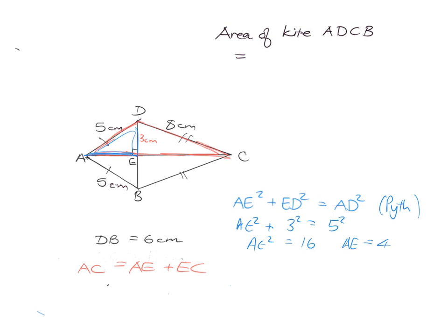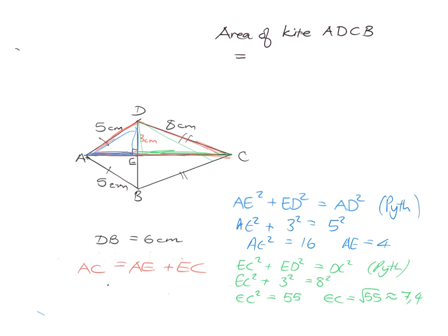Now for the other piece EC, which is sitting in its triangle. We use Pythagoras again: EC² + ED² = DC². So EC² + 3² = 8², giving EC² = 64 − 9 = 55. Therefore EC = √55, which works out to be approximately 7.4 centimeters, rounded to one decimal place.